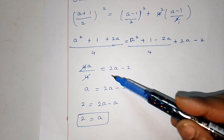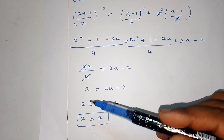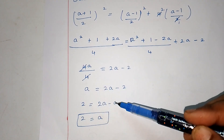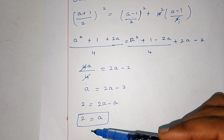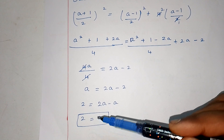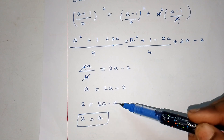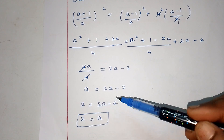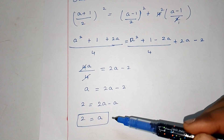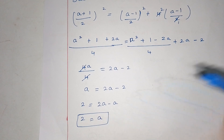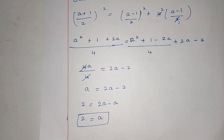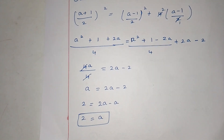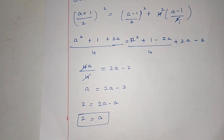So, minus 2 plus 2 gives plus, and a minus a gives 2 equals 2a. Therefore a equals 2. A is equal to 2 — we have proved the condition. Clear?